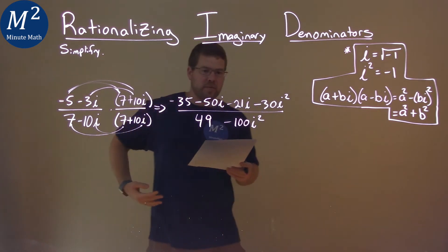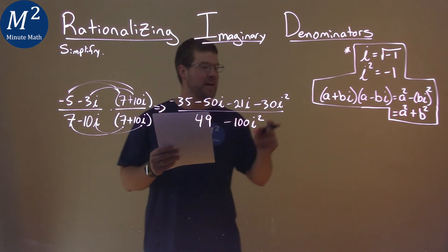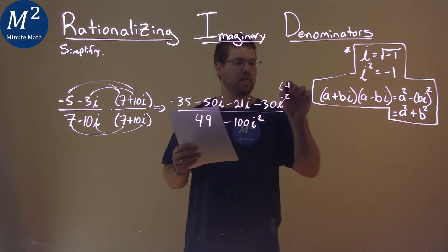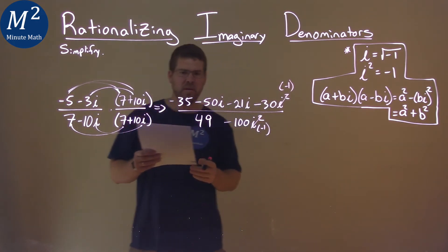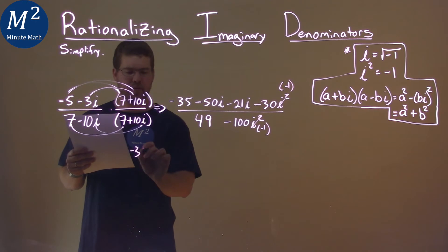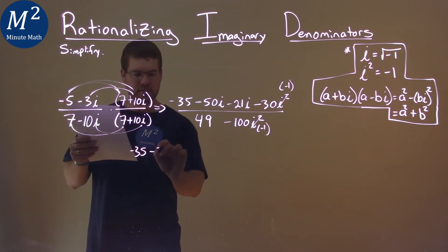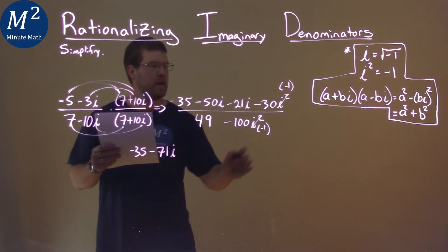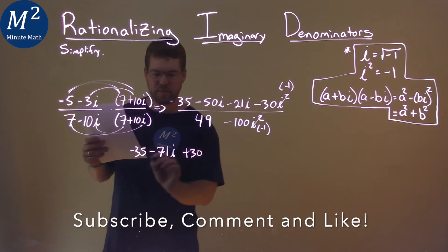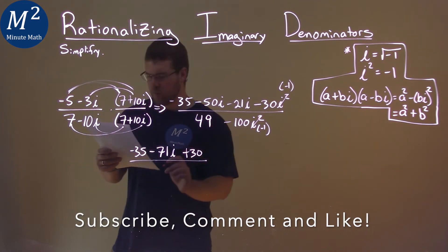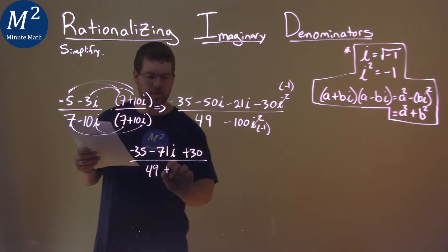So now we want to simplify this whole thing. The main key, though, is i squared equals negative 1. So let's bring down the numerator, negative 35, and then minus 50i minus 21i is minus 71i. And negative 1 times negative 30 is positive 30. Over 49 here. And negative 100 times negative 1 is positive 100.